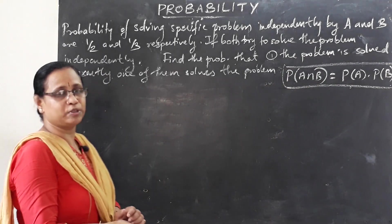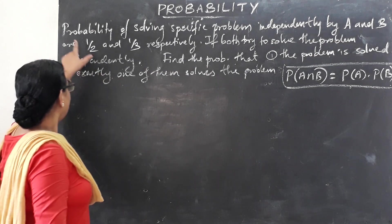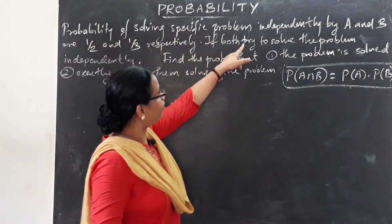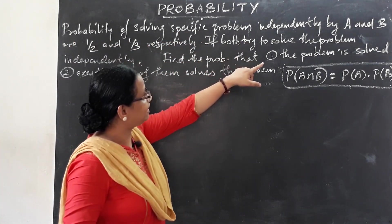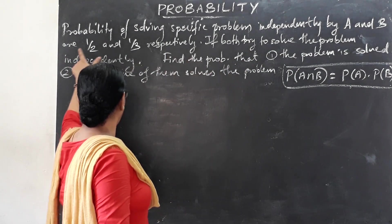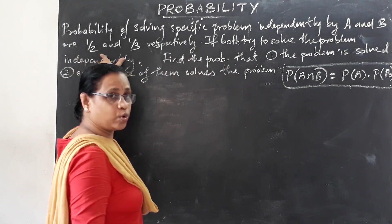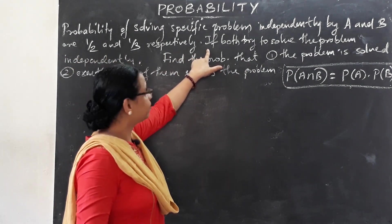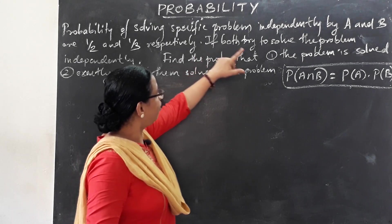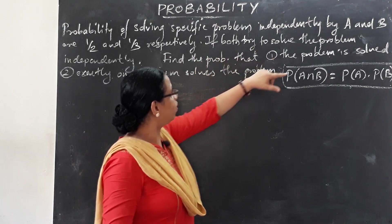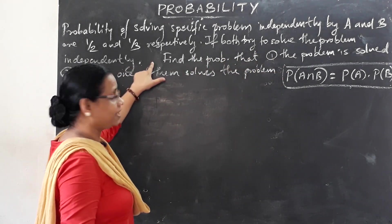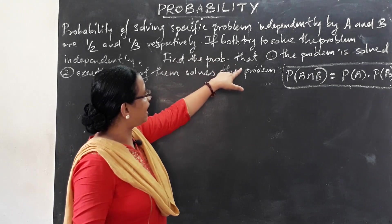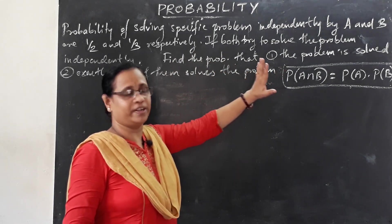Let's take a look at the example. The probability of solving a specific problem independently by A and B are 1/2 and 1/3 respectively. If both try to solve the problem independently, find the probability that the problem is solved.